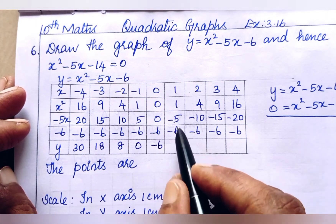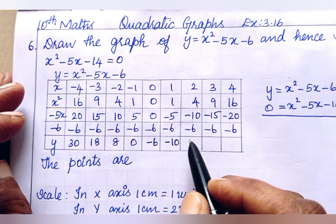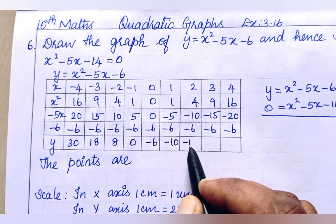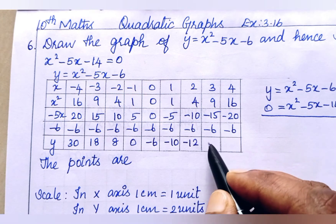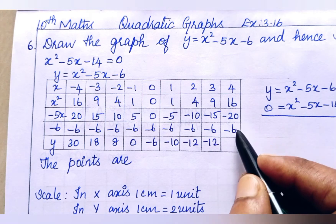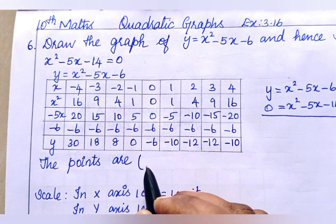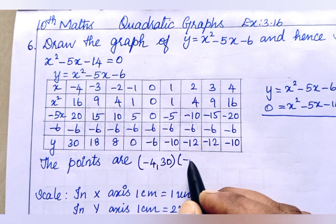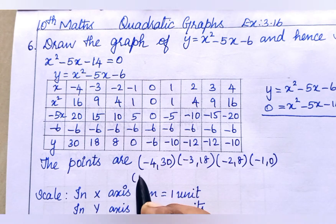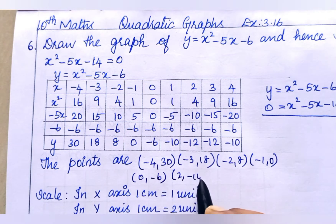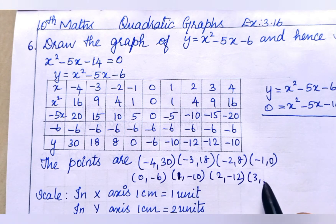For x equals 0: 0 plus 0 minus 6 gives minus 6. For x equals 1: 1 minus 5 minus 6 gives minus 10. For x equals 2: 4 minus 10 minus 6 gives minus 12. For x equals 3: 9 minus 15 minus 6 gives minus 12. For x equals 4: 16 minus 20 minus 6 gives minus 10. So the points are: (minus 4, 30), (minus 3, 18), (minus 2, 8), (minus 1, 0), (0, minus 6), (1, minus 10), (2, minus 12), (3, minus 12), (4, minus 10).